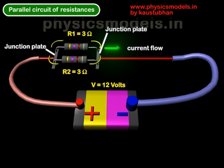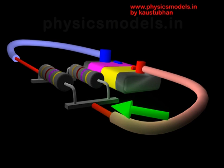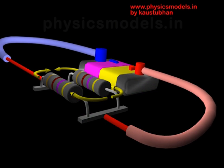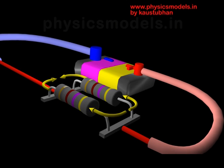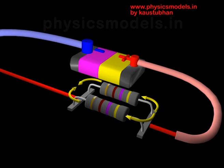So let's take a battery of 12 volts and two resistors of 3 ohms each. This is an animation just to emphasize that the current has to get divided. The green arrow shows the current and the junction plate is clear so it will cross both the resistors.